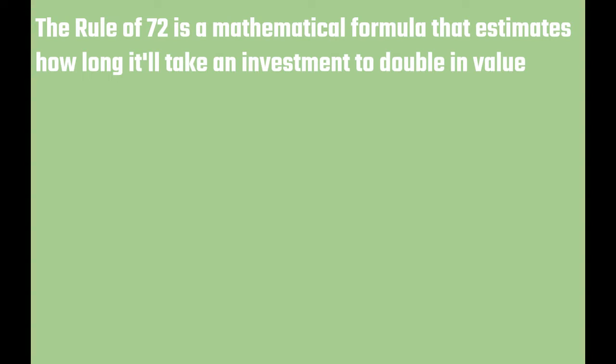That is, this rule of 72 formula is used to identify the time required to double an investment amount at a given rate of interest.